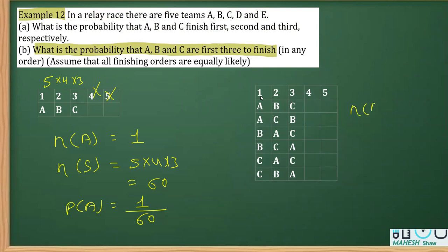The favorable outcomes for part (b) give us N(B) = 6. The total outcomes N(S) remains the same as before, which is 60, since we only consider the first three positions.